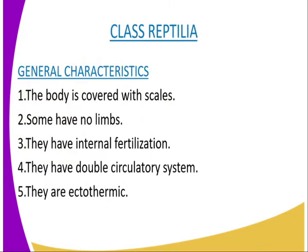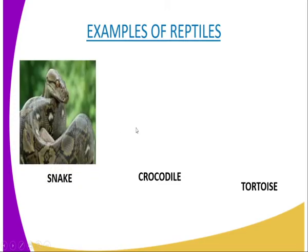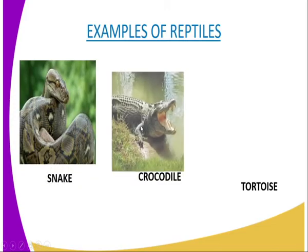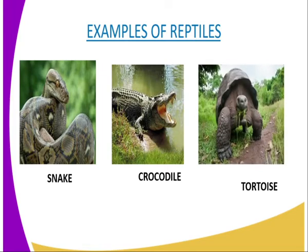Having done that, we can have our second class, which is class Reptilia. We have several examples of reptiles whereby the first is the snake, the second is the crocodile, and the third is the tortoise. As I give the general characteristics, you can look at our diagrams so that you may be able to identify those characteristics from them.